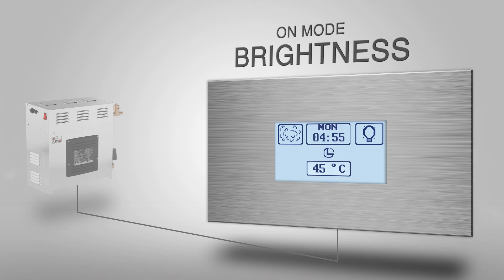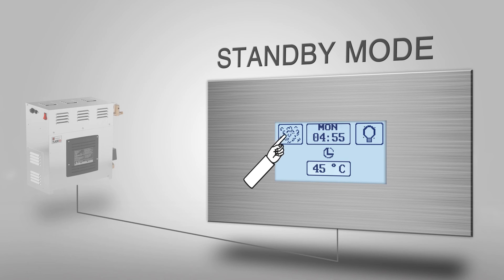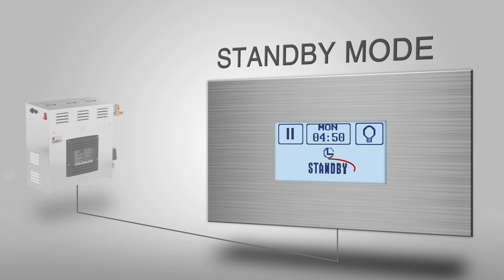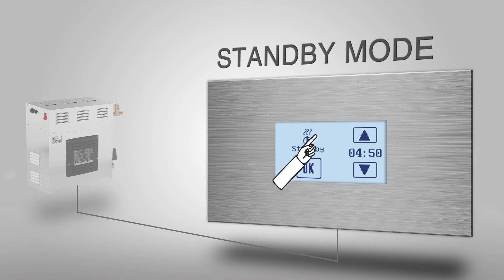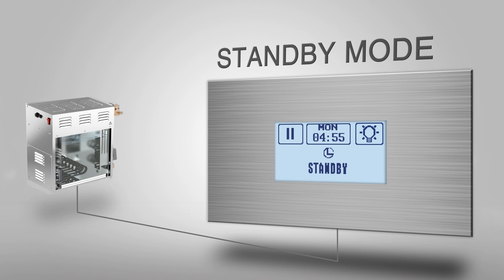If you're not using the steam room continuously, set it under standby mode by pressing the animated steam button. A standby icon appears. Click the day and session time bar to modify the standby time, then change the values from the arrow icons.